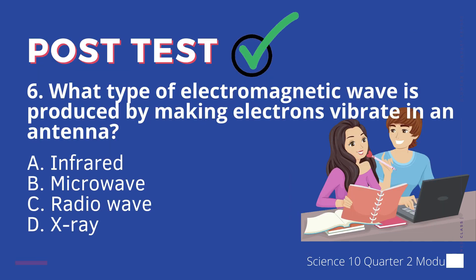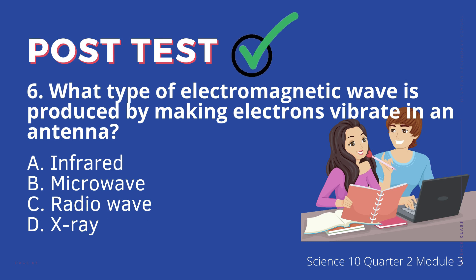6. What type of electromagnetic wave is produced by making electrons vibrate in an antenna? A. Infrared, B. Microwave, C. Radio wave, D. X-ray.